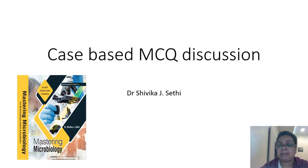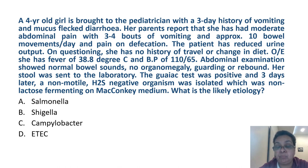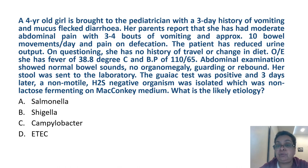Without further ado, let's quickly get started. A four-year-old girl is brought to the pediatrician with a three-day history of vomiting and mucous-flecked diarrhea. Her parents report that she has had moderate abdominal pain with three to four bouts of vomiting and approximately 10 bowel movements per day and pain on defecation. The patient has reduced urine output. On questioning, she has no history of travel or a change in diet. On examination, she has a fever of 38.8 and a blood pressure of 110/65.